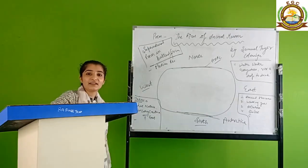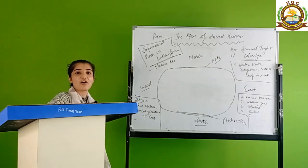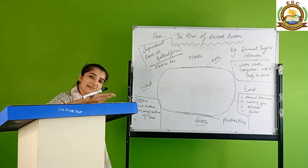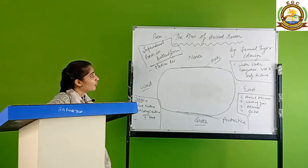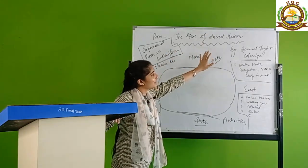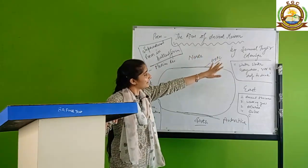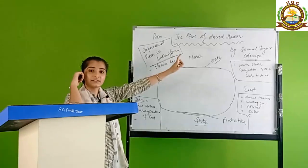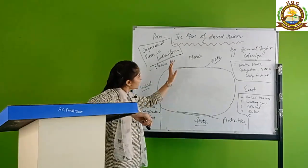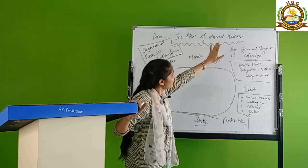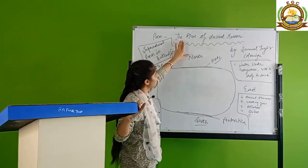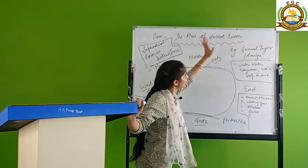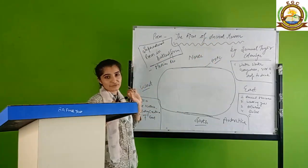We have done earlier the syllabus of BA 3rd literature class. Continuing that class syllabus, we will do The Rime of the Ancient Mariner by Samuel Taylor Coleridge. This is a poem by Samuel Taylor Coleridge. The Rime of the Ancient Mariner. Rhyme means story, the story of an ancient mariner. This is a ballad form.